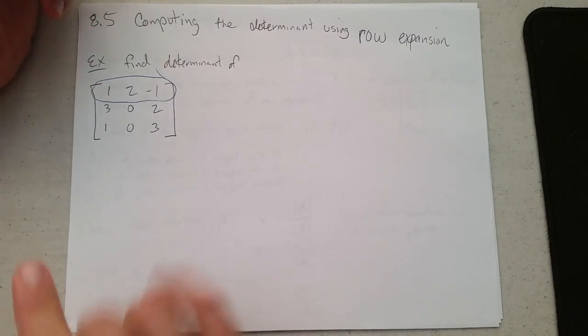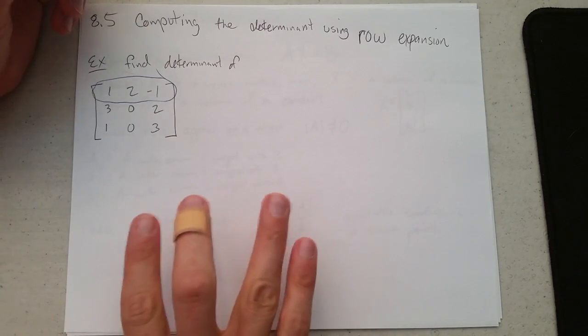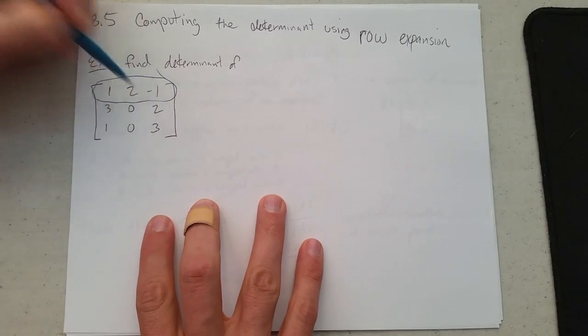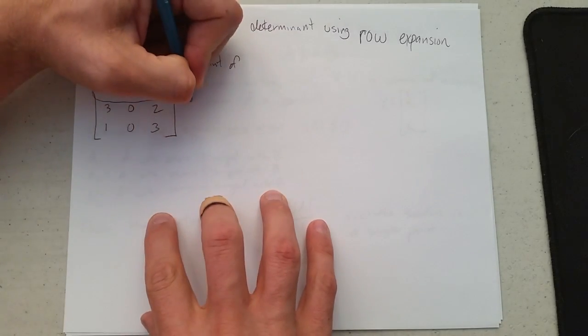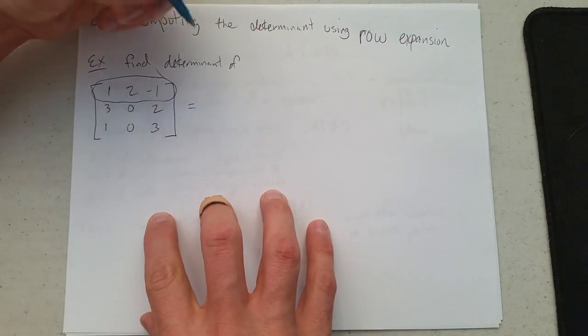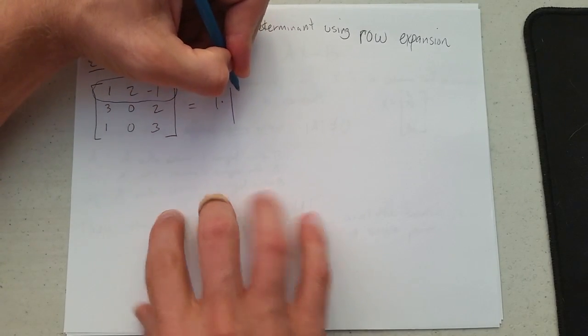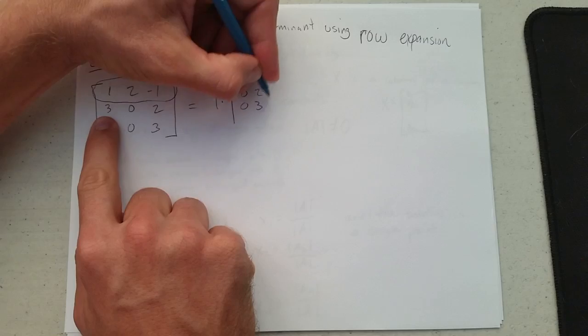Now the way we do this, it is the alternating sum. We're going to pick out this coefficient multiplied by the determinant of the minor. So it's 1 times the determinant of the minor, which is 0, 2, 0, 3.